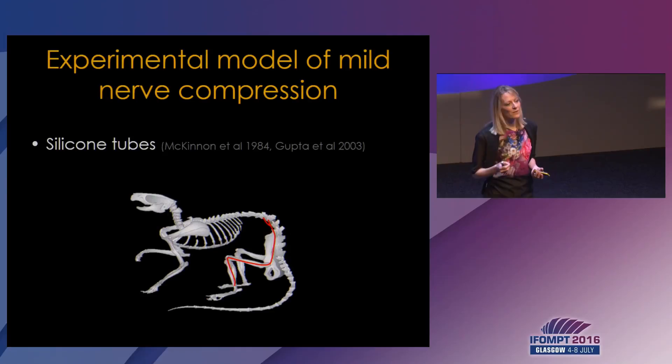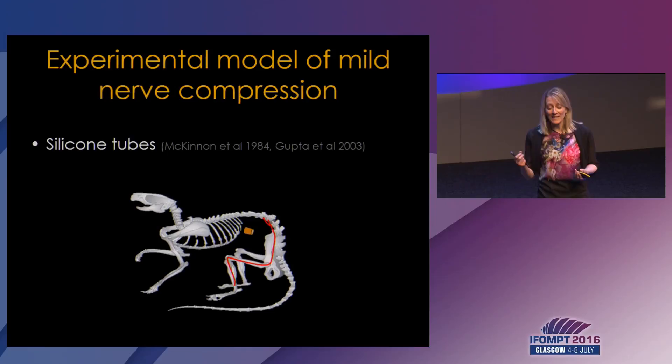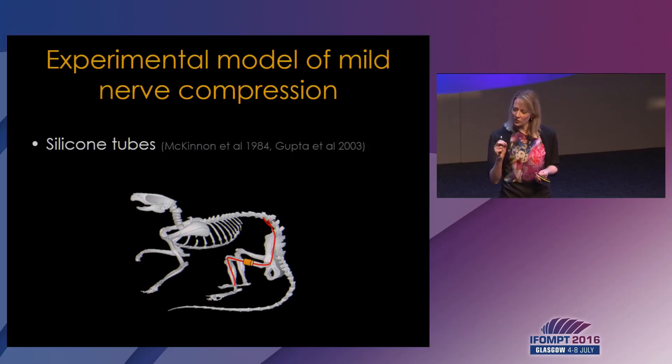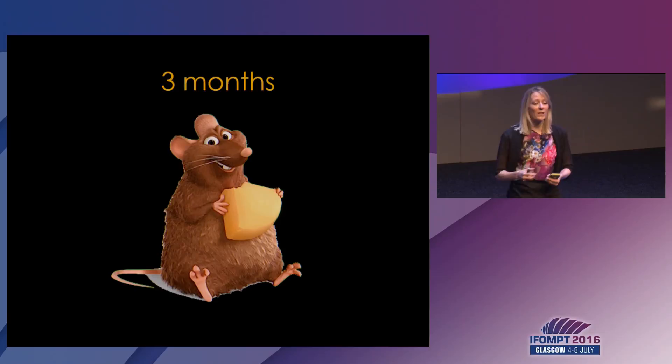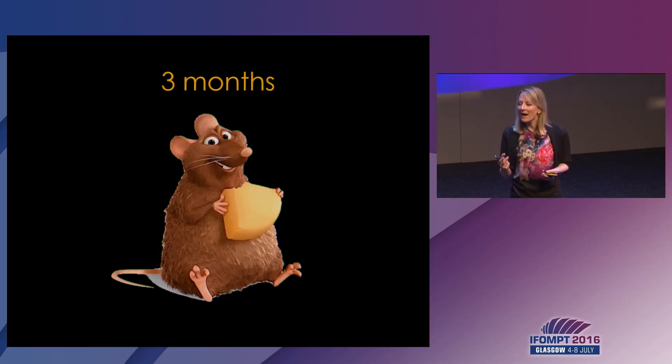To address this problem, we developed an animal model that mimics mild nerve compression. We placed a silicone tube around the sciatic nerve of young rats. At the time of tube placement, the tube does not constrict the nerve — it sits snugly around it. Over three months as the animals grow, the nerve slowly compresses within the tube. This gives us a model of a chronically developing, very mild entrapment neuropathy that mimics what we see in our patients.